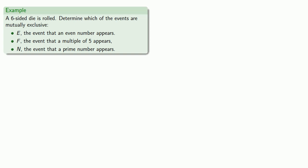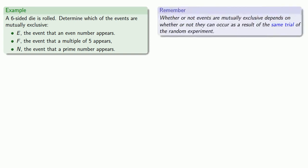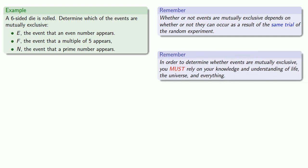The important thing to remember is that whether or not events are mutually exclusive depends on whether or not they can occur as a result of the same trial of the random experiment. The other thing to keep in mind is that in order to determine whether events are mutually exclusive, you must rely on your knowledge and understanding of life, the universe, and everything. So let's consider these events.